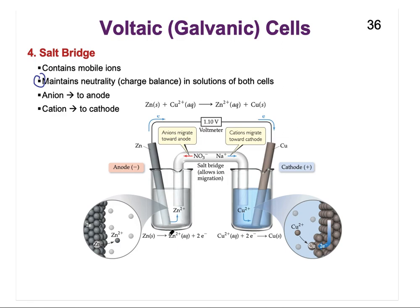On the left-hand side, over time we are releasing more and more positive zinc ions while electrons leave, resulting in a positive charge accumulation. So negative ions from the salt bridge come toward that side to balance the positive charge. On the right-hand side, copper 2+ is being converted into solid copper, meaning we are losing positive charges from solution.